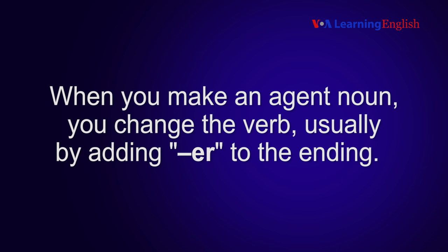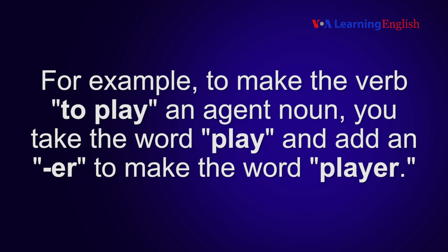When you make an agent noun, you change the verb, usually by adding e-r to the ending. For example, to make the verb to play an agent noun, you take the word play and add an e-r to make the word player.